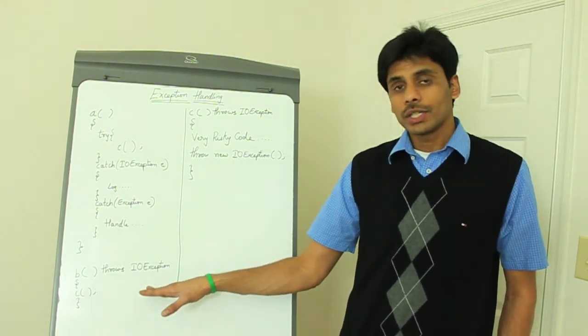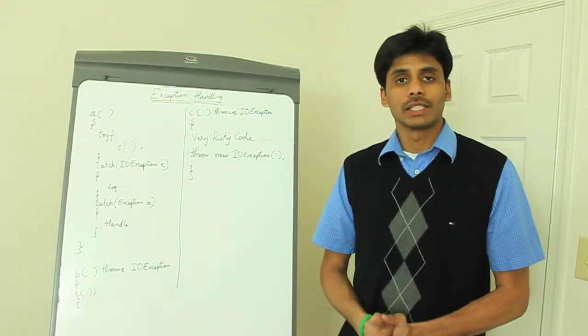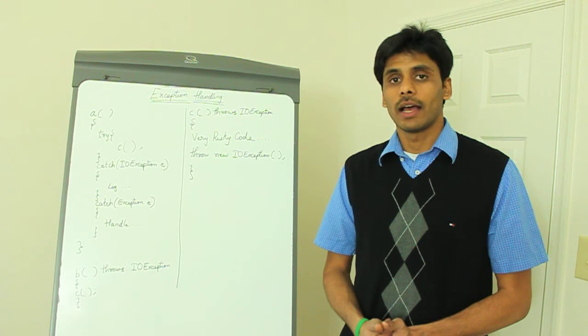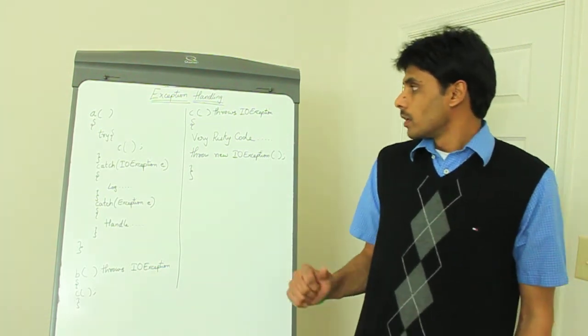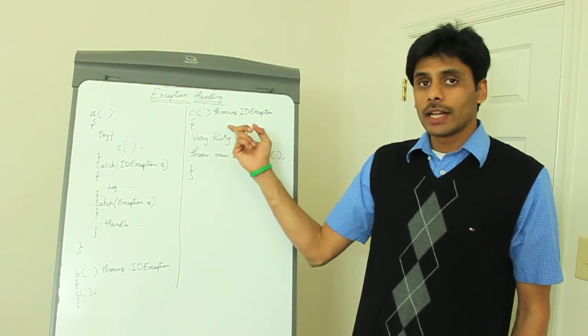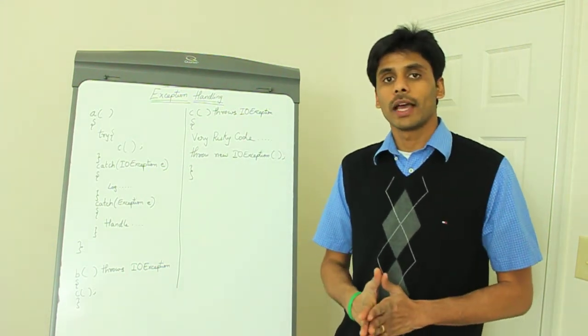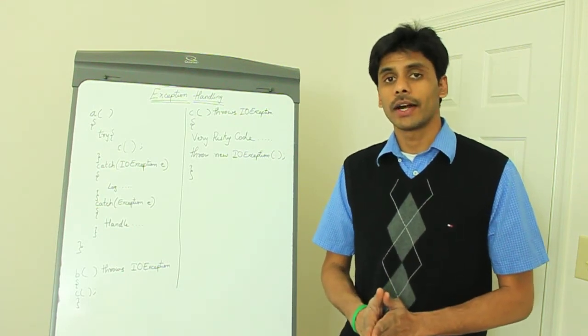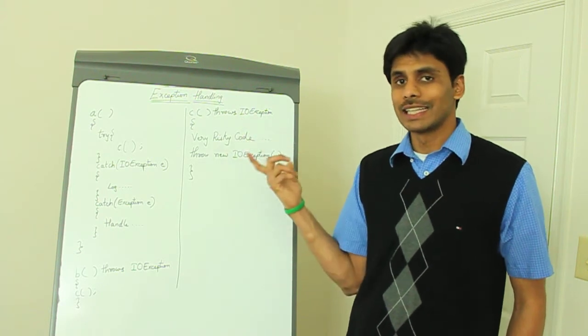By using the throws declaration, method B is telling the compiler that I am not going to handle this checked exception, but my caller should. And you also see that we use the throws declaration on method C. So any method that's throwing a checked exception should declare the exception using the throws keyword right at the end of the method's signature.